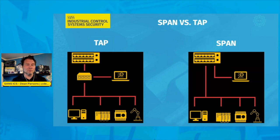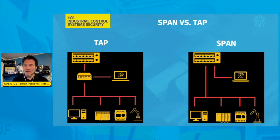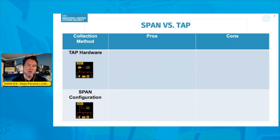Using a SPAN configuration, it's typically a reconfiguration of a fully managed switch in the environment and does not require additional hardware like a TAP. There are pros and cons to each, and you may or may not be set up today for either of them, but we typically see organizations have a SPAN capability already in the network. Let's take a look at the pros and cons between a SPAN configuration and TAP-specific hardware.